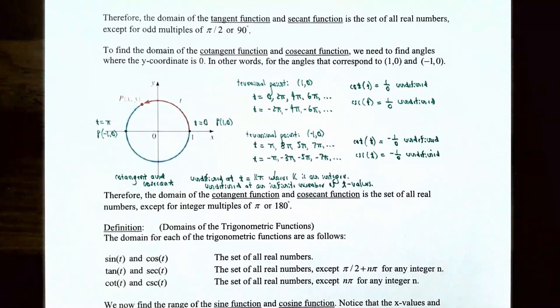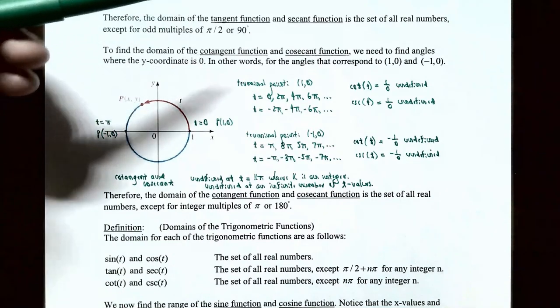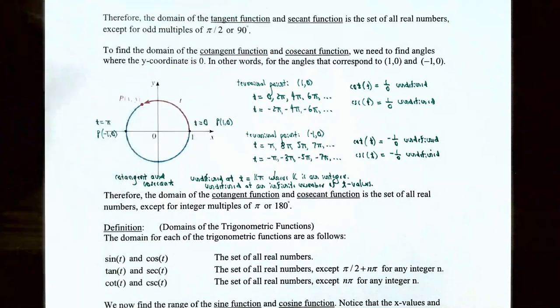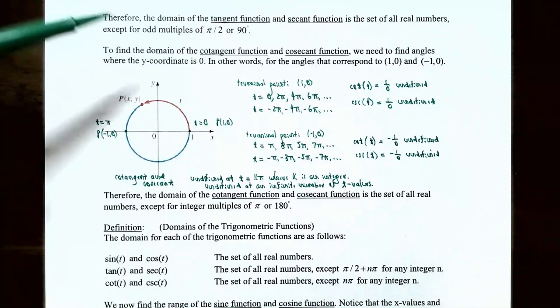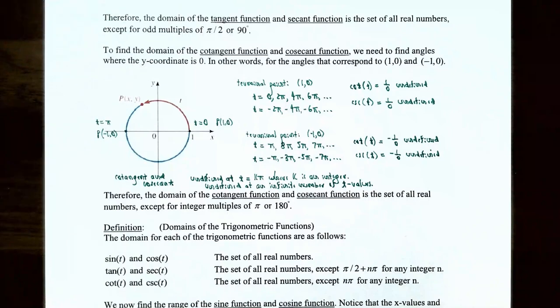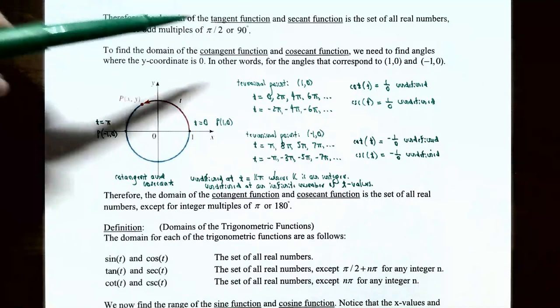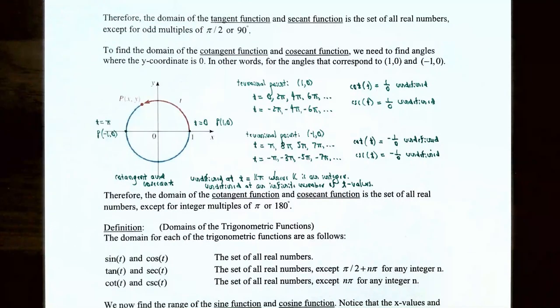So the domain of the tangent function and the secant function is the set of all real numbers except for odd multiples of pi over 2, or odd multiples of 90-degree angles.